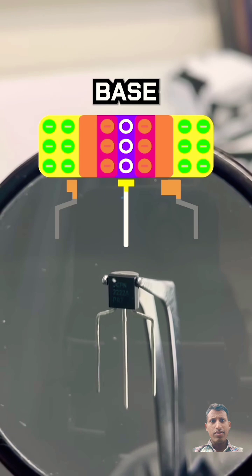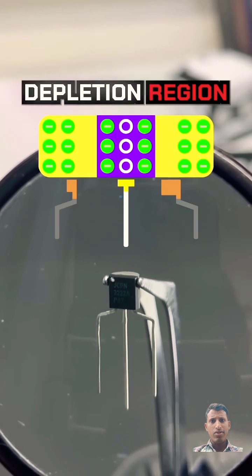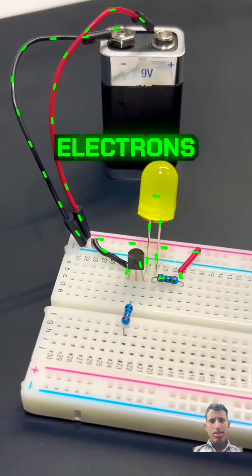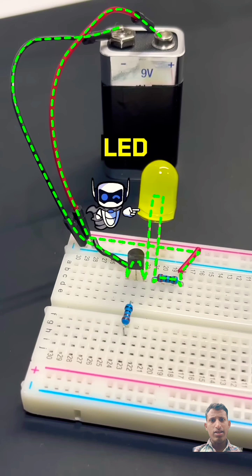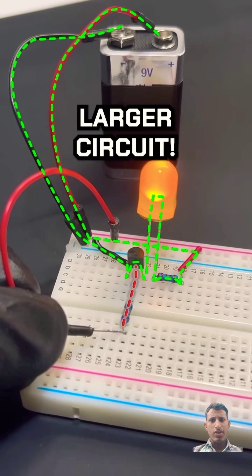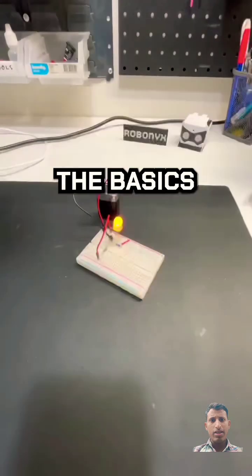When we apply a small voltage to the base, it reduces the depletion region, allowing electrons to flow from emitter to collector. Electrons want to flow from the battery to the LED. It's blocked until we apply a small voltage to the base, completing the larger circuit. And that's the basics of transistors.